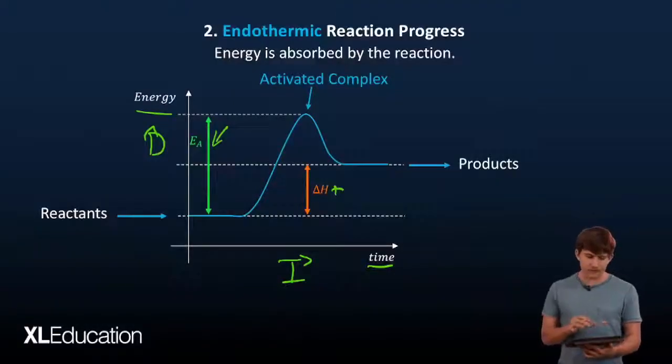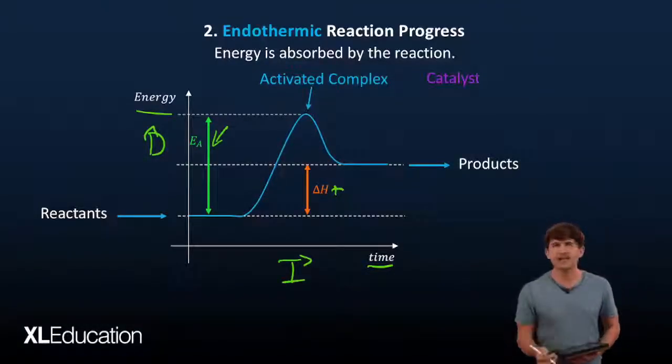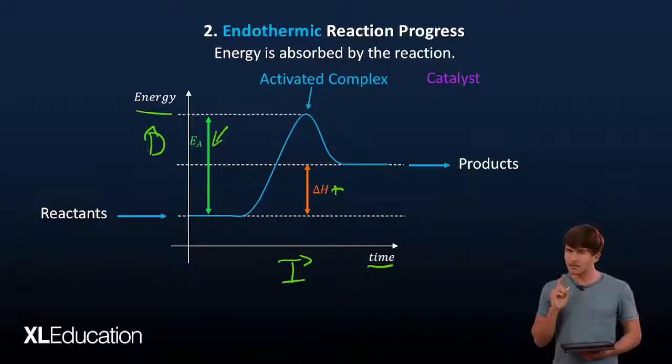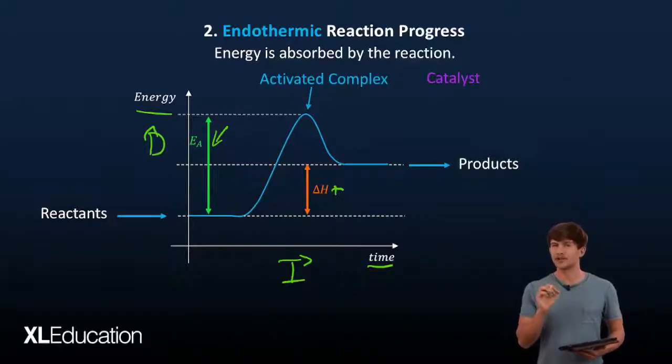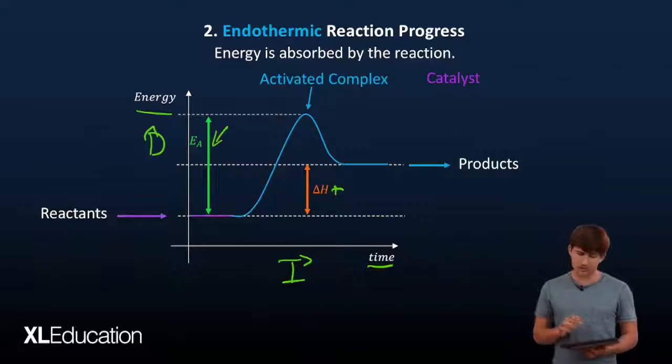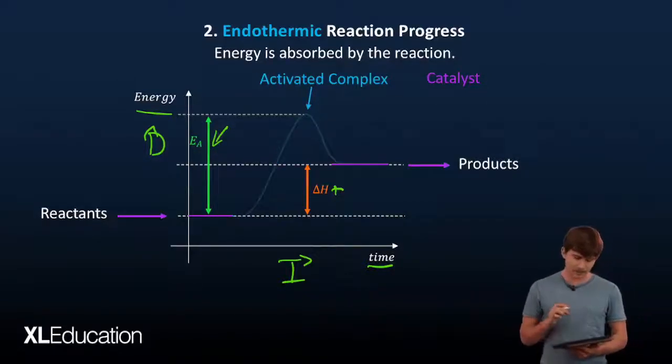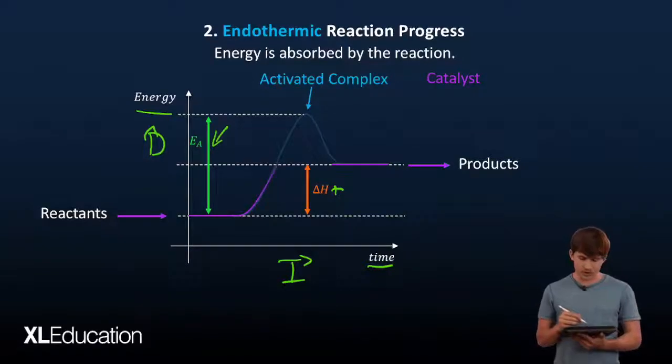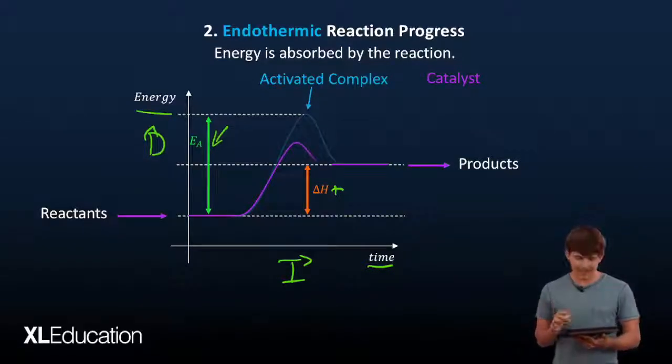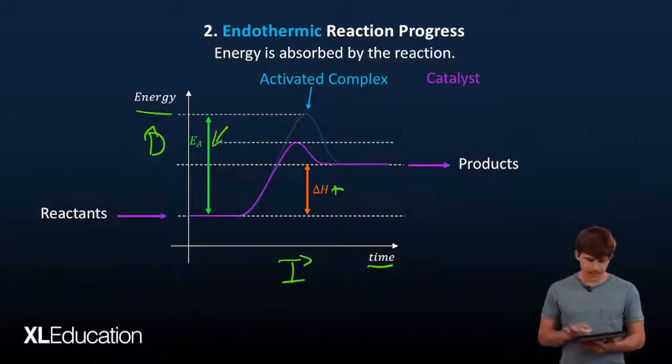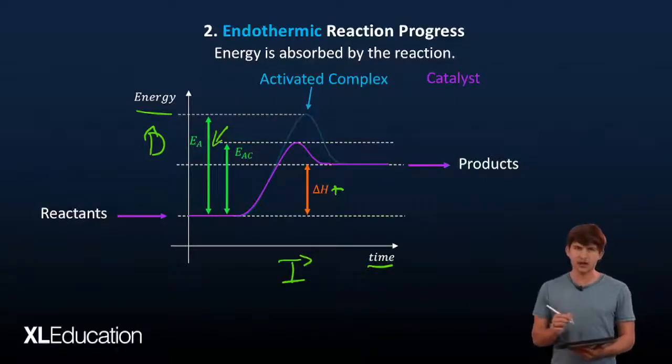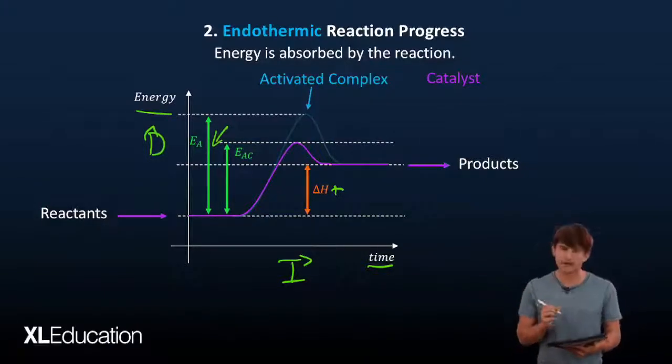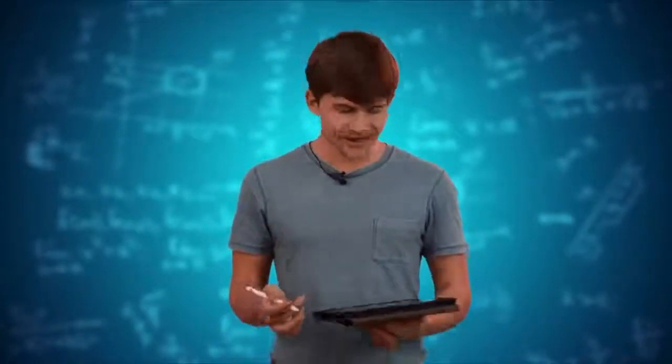We still want to know what does a catalyst do to the system. Remember catalysts don't do anything to the system but lower the activation energy. The reaction energy to start off with stays the same, the product energy also stays the same, but if we look at how this graph grows it hits that lower peak yet again. Here we can see the activation energy lower Ea is significantly larger than Eac, the activation energy of the catalyst.